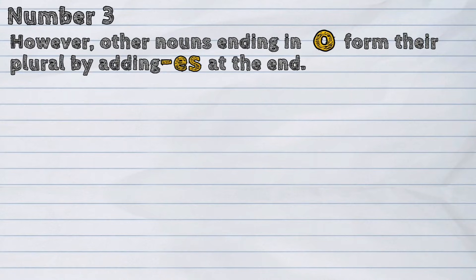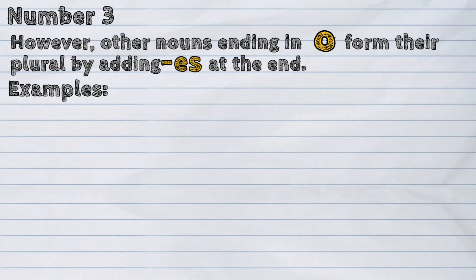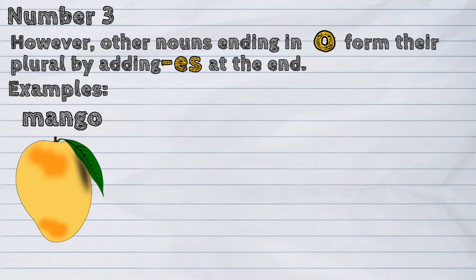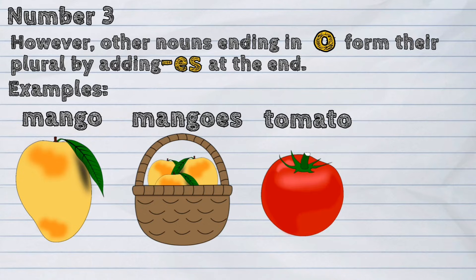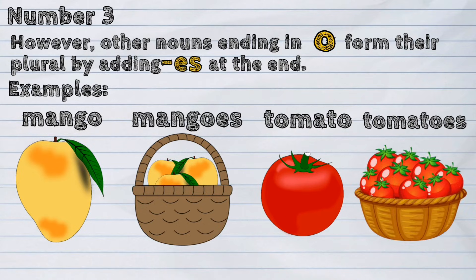However, other nouns ending in 'o' form their plural by adding 'es' at the end. Examples: mango, mangoes; tomato, tomatoes.